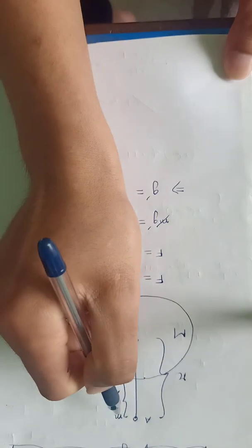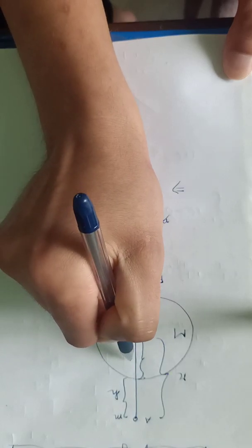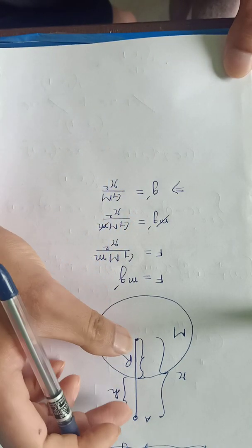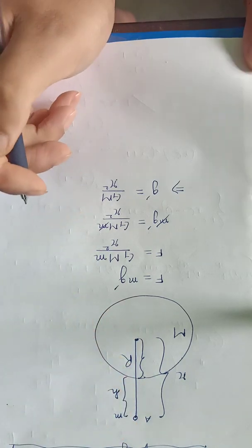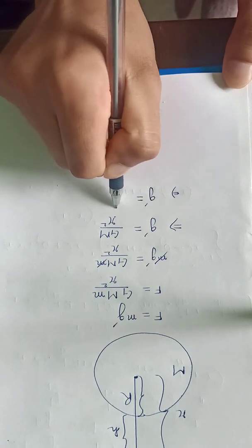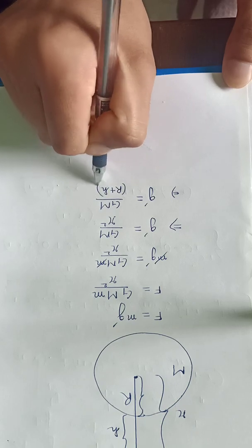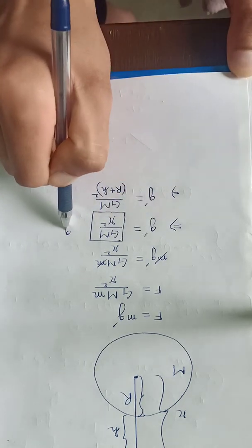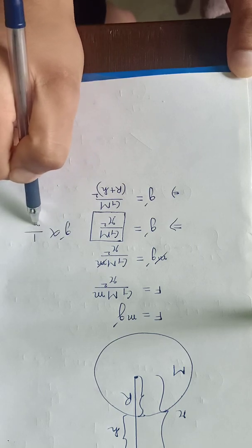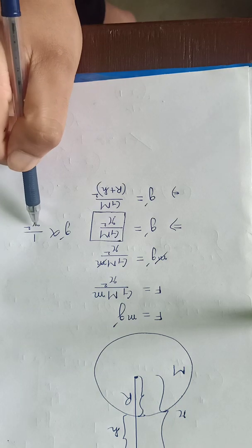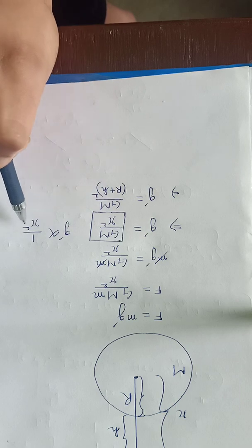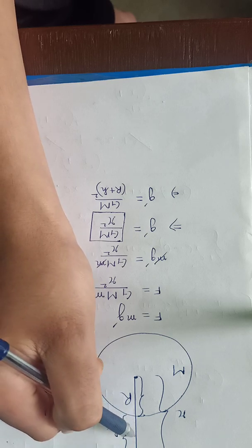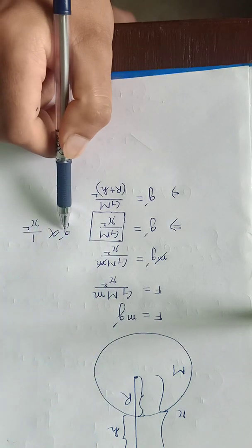Now I can write r in terms of h. The radius of the Earth is capital R, so the distance between the centers of the two bodies will be capital R plus h. Therefore g' equals GM divided by (R plus h) squared. From this relation we see that g dash is inversely proportional to r squared — that means as r increases, the value of g dash decreases. So if an object goes away from the surface of the Earth, the acceleration due to gravity decreases.